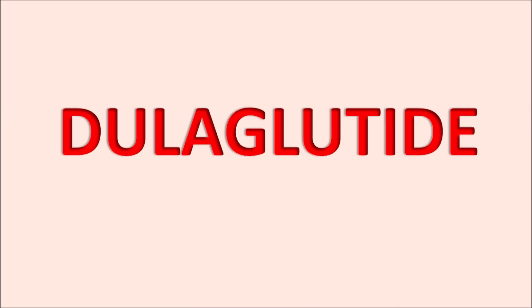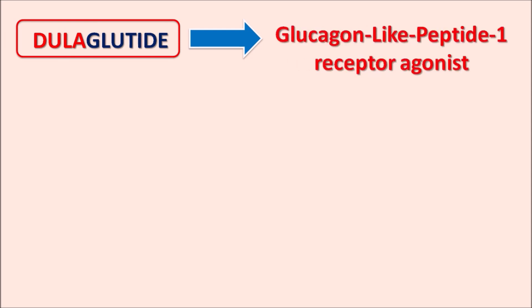Today in this video we are going to discuss about Dulaglutide. The suffix 'glutide' indicates this drug is an incretin mimetic. So Dulaglutide is a glucagon-like peptide-1 receptor agonist, commonly known as a GLP-1 agonist.